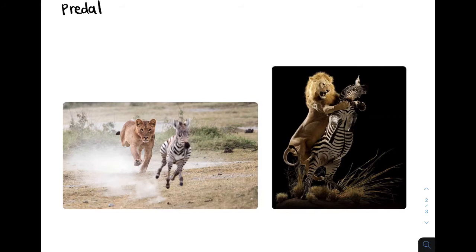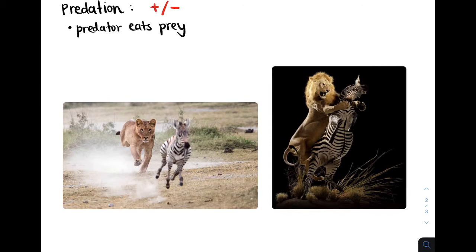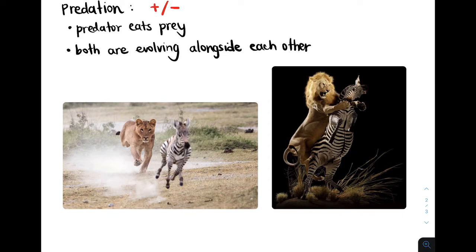Unlike parasitism, in which a parasite doesn't actually kill the host, predation involves a predator killing and eating its prey. Here we have a lion and a zebra. The predator is the lion and it is going to eat its prey, which is the zebra. A couple things to keep in mind about predation is that the predator and the prey are constantly evolving adaptations and defenses alongside each other.